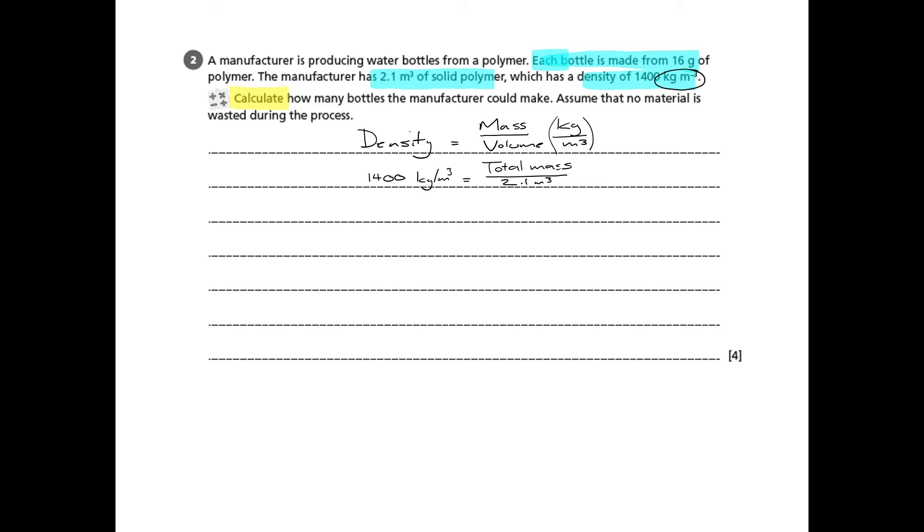So we need to rearrange that formula so that we can get total mass on its own on one side. We multiply both sides by 2.1, so we end up with total mass equals 1400 by 2.1. Plug that into the calculator and you get 2940 kilograms.